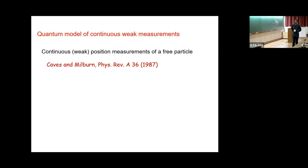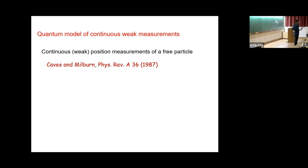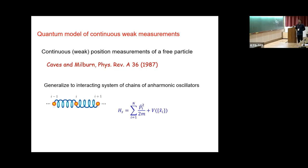Let us start with the quantum model of continuous weak measurement. We are essentially trying to generalize a model — probably done earlier by many people — starting from the well-known paper by Caves and Milburn, where they wrote down a weak measurement model for a single particle. We are going to generalize it to many coupled oscillators. Essentially, this one-dimensional oscillator is described by a model with kinetic energy and interacting potential energy between the oscillators — a quadratic term, quartic term, etc. This is what I call the system Hamiltonian.